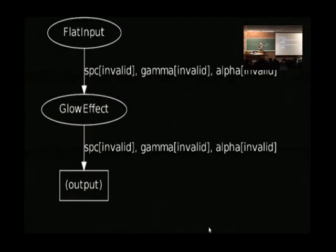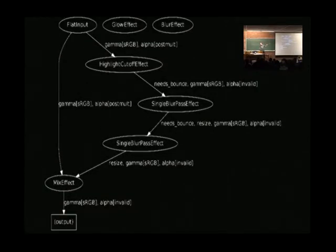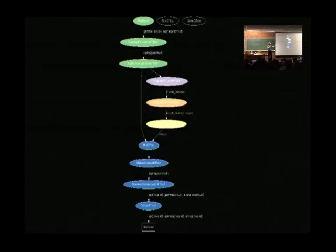Doing this creates a chain internally. This is a debug dump from where MoveIt works. You have an input, a glow effect, and an output. Internally, the first thing MoveIt does is rewrite it to some big hideous monster. A glow effect is: cut out the highlights, blur it horizontally, blur it vertically, and add it back to the original. Then after about 19 passes of this mini compiler, it has inserted all the gamma conversions you need. It's split things into phases — you can see the different colors here, because sometimes it's advantageous not to do everything chained. And it's eventually created shader programs for you.